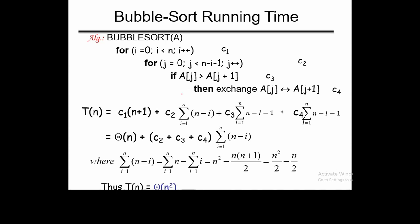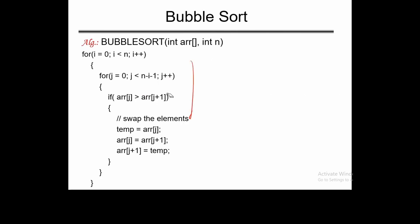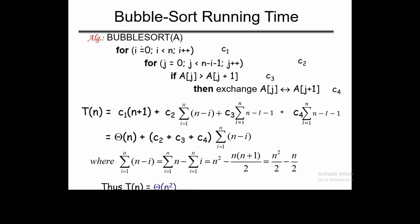Now let's talk about the complexity of bubble sort. The outer loop has cost c1, the inner nested loop has cost c2, the comparison operation inside the inner loop has cost c3, and the swapping operation has cost c4. The outer loop executes n plus 1 times — from 0 to n, including one extra check for the condition. The inner loop executes n minus i times for each value of i.